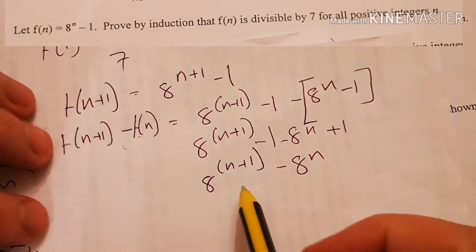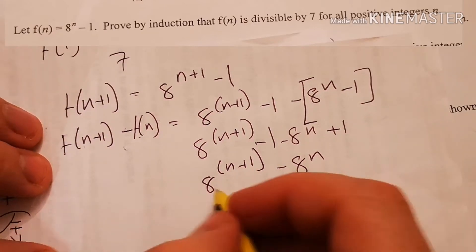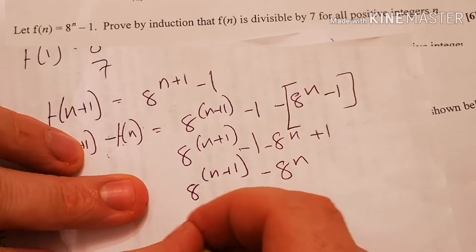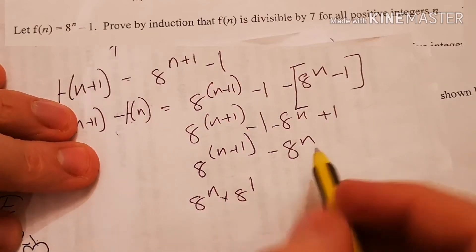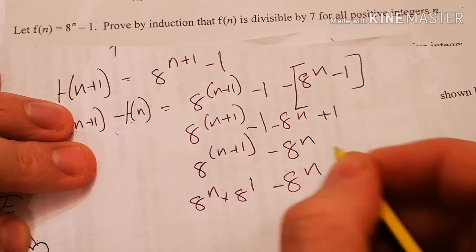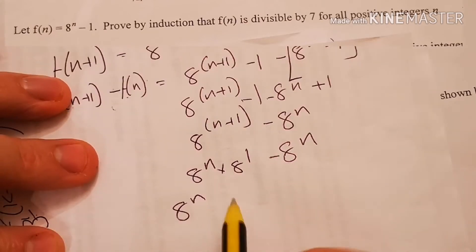This always throws me a little bit here, but if we think about factorizing, I can write this as 8^n times 8^1, because with laws of indices we normally add them, minus 8^n. I can try and factorize out 8^n from both these terms.